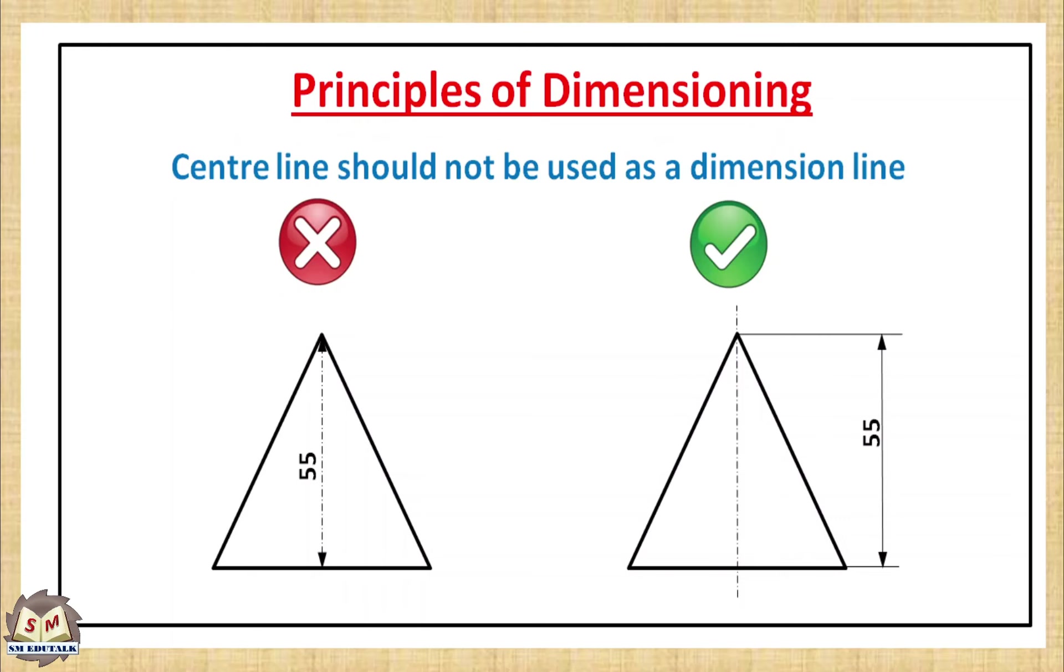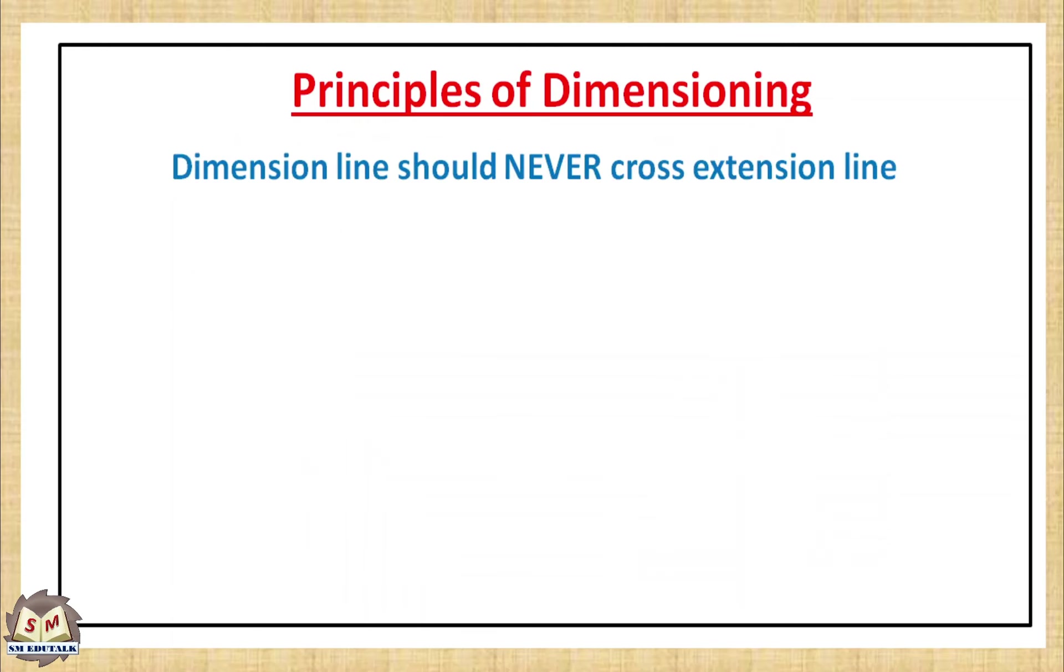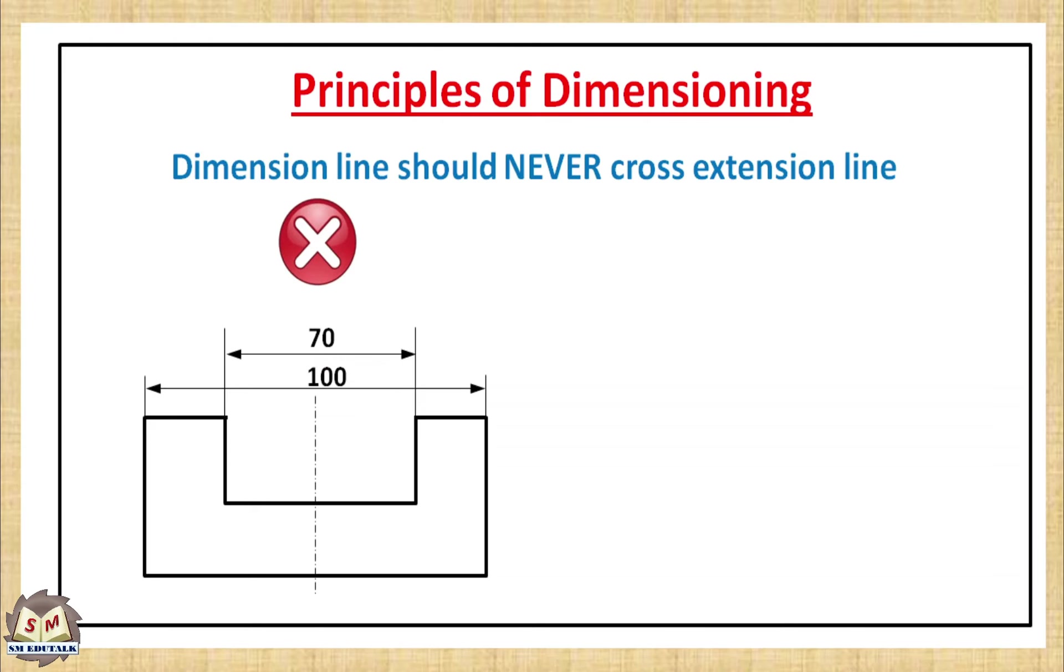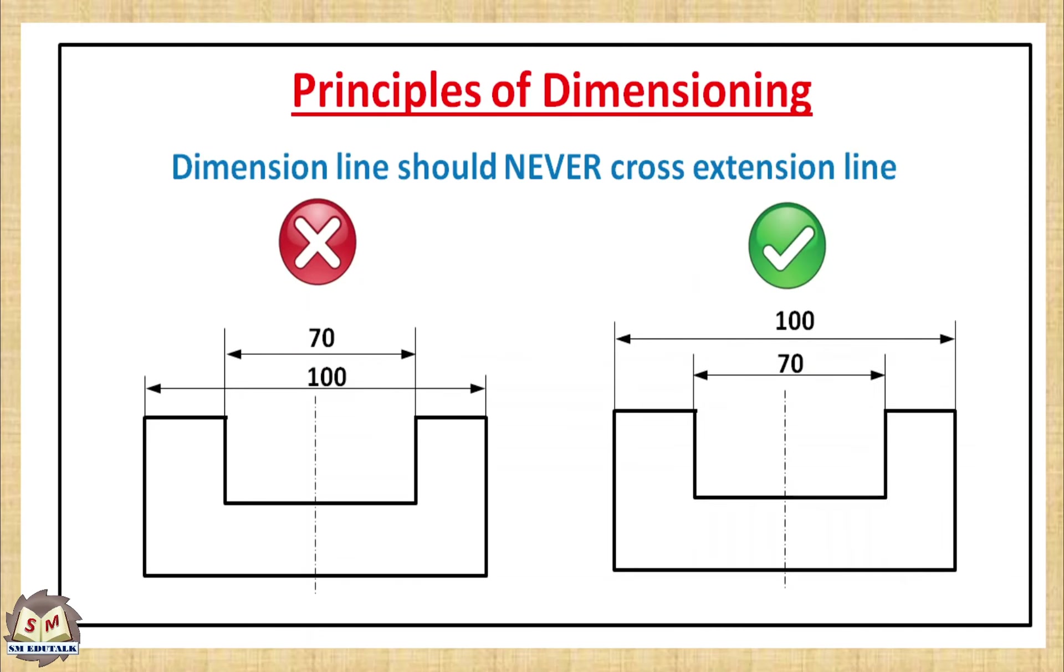Dimension line should never cross extension line. So in this object, 100 is one dimension line and 70 is another dimension line. The extension lines used for 70 dimension line have crossed the 100 dimension line. So as per our principle this is wrong. To correct this, keep the major dimensions on outer side, keep the minor dimensions on inner side. Like this. So now you can avoid crossing the dimension line with the extension lines. So this is the correct one. In this, dimension line is not crossed with the extension line.